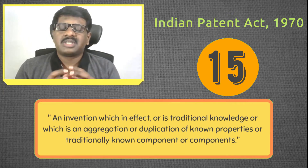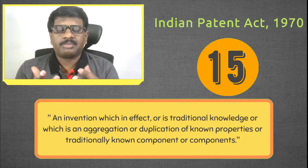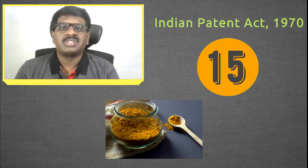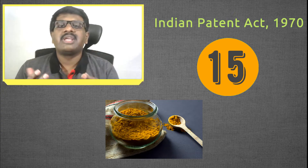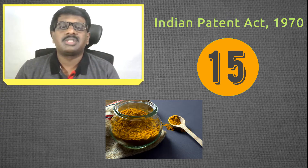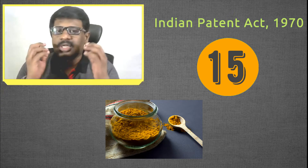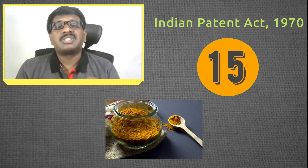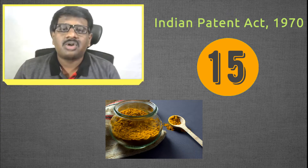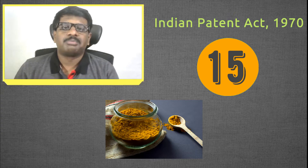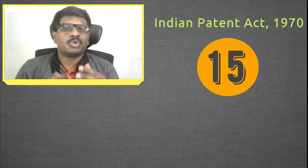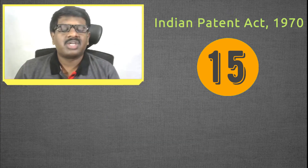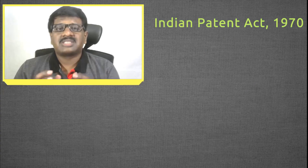Any invention which is merely the result of traditional knowledge is not patentable in India. For example, turmeric has antimicrobial properties, and because of this, people have been applying it on injuries to cure them faster for hundreds or thousands of years. Since this knowledge has been passed down through generations, it is traditional knowledge rather than an invention, and such things cannot be patented in India.